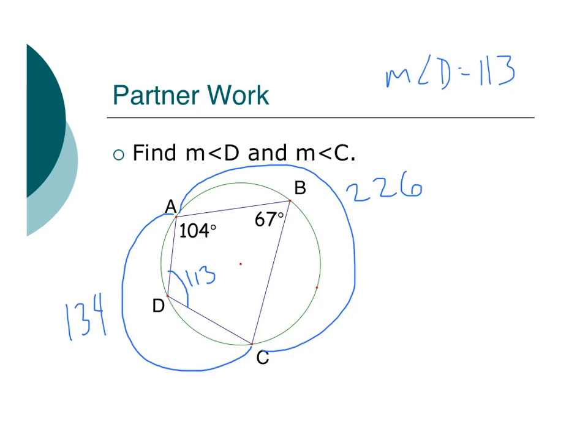Now I need to do the same thing to find the measure of angle C. If this right here is 208, then we have this one right here which is 152, because 360 minus 208 gives me 152. And now half of that would be this inscribed angle, which is 76. So my measure of angle C equals 76.